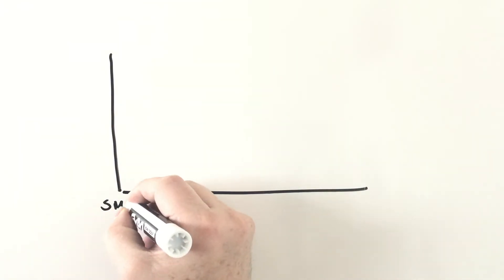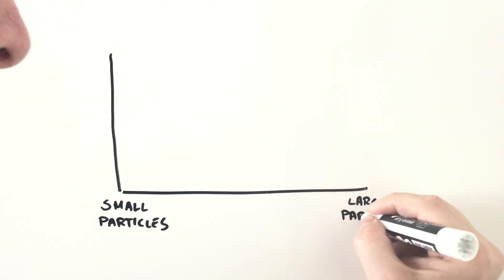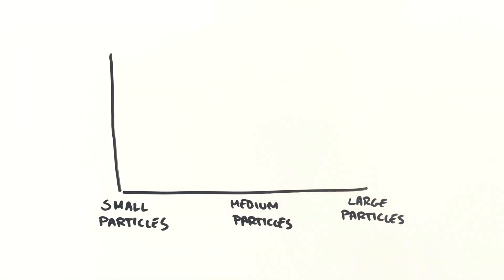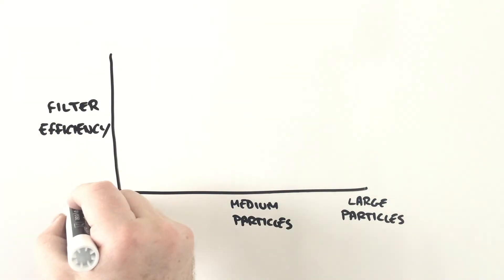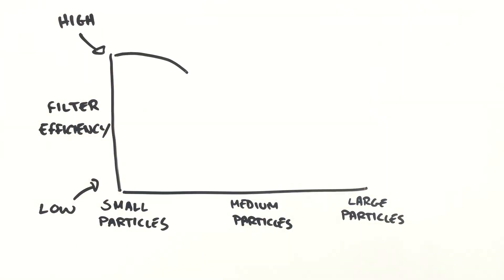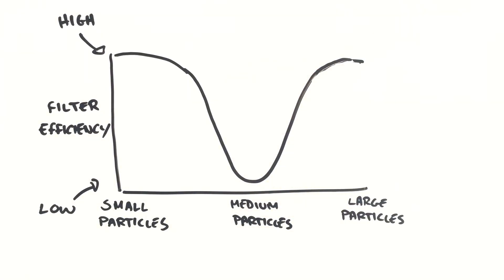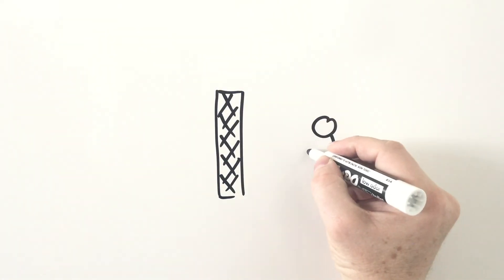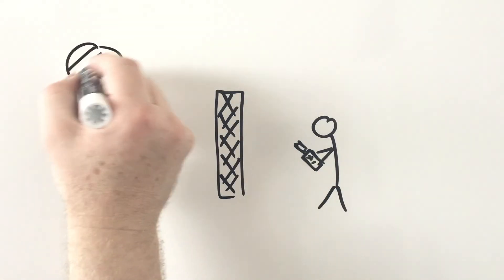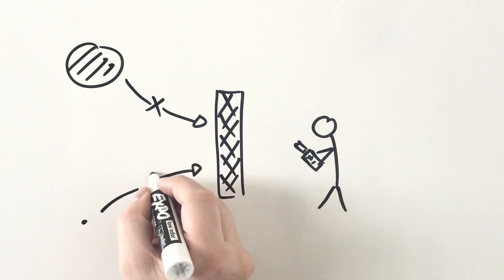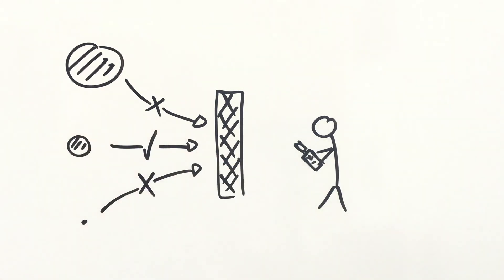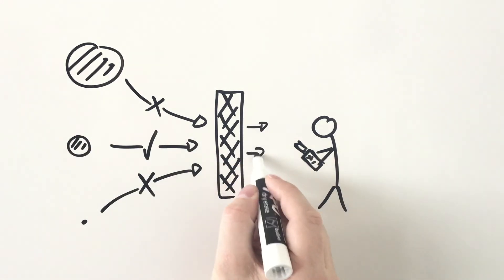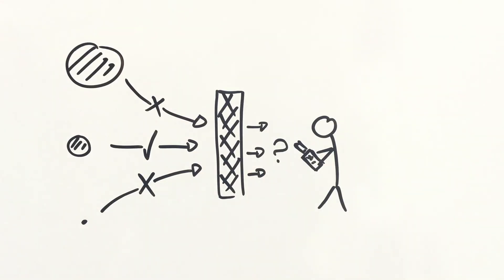So at the end of the day, it's not the smallest airborne particles that are the hardest to filter out, but the medium-sized ones — those that are too small to be captured through inertia, but too large to be captured through Brownian motion. This is why, when manufacturers design and test air filters, they don't use the largest particles or the smallest ones, but the middle-sized ones: those particles that are just the right size to slip through and make it to the other side. Take care.